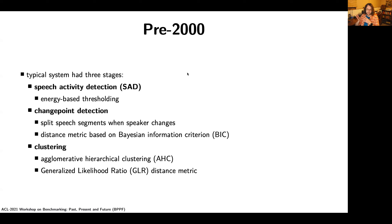Systems of this era had three modules typically: a speech activity detection module that would take raw audio and output speech segments; a change point detection module that would split those segments at speaker change points to give speaker-homogenous speech segments, typically using a distance metric based on the Bayesian information criterion; and then clustering of that output, typically agglomerative hierarchical clustering with segment-segment distances determined using a generalized likelihood ratio-based distance metric.